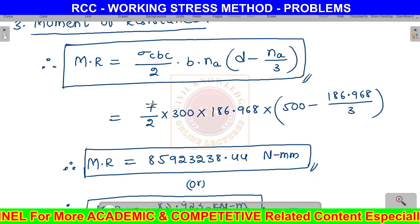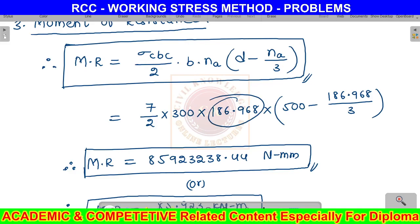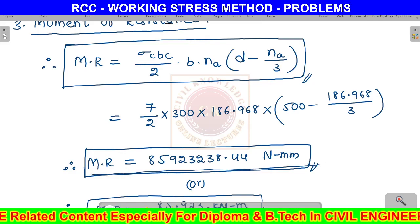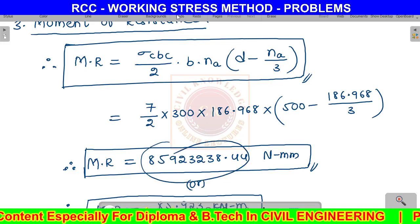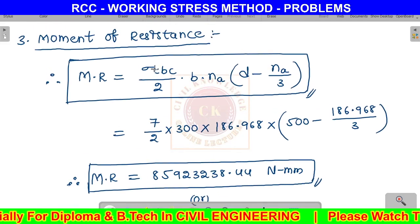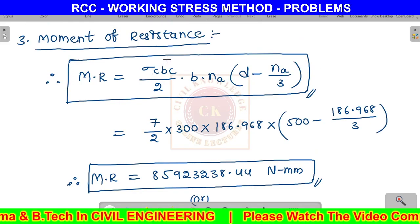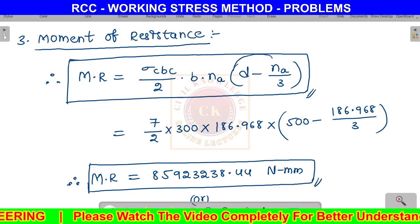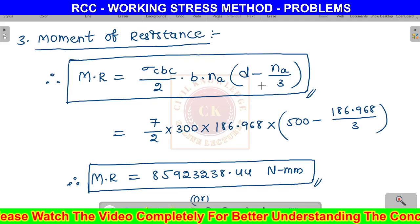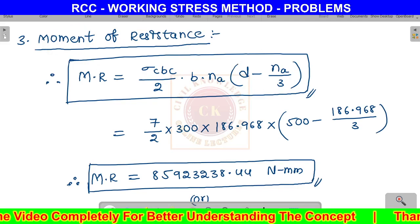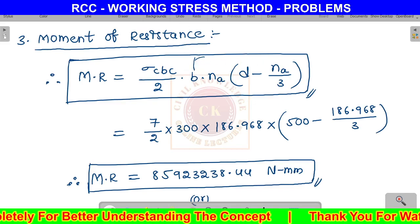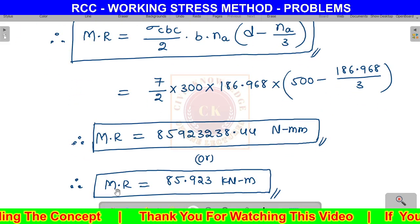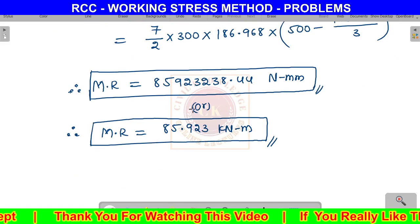Moment of resistance MR equals sigma cbc by 2 times b na times d minus na by 3. Substituting: sigma cbc is 7, b is 300 mm, na is 186.986, effective depth d is 500. The unit is newton mm, where stress times area gives force, and force times perpendicular distance gives moment of resistance.